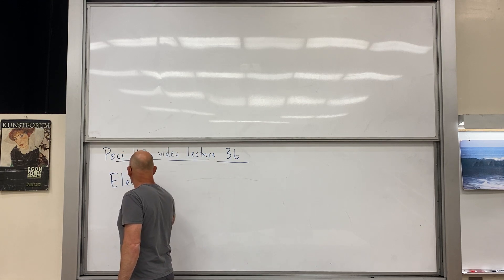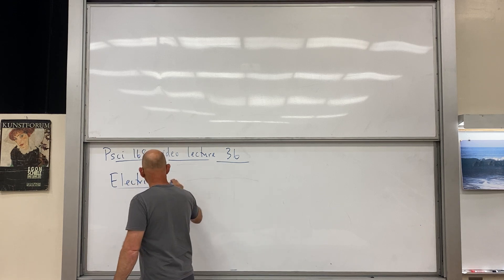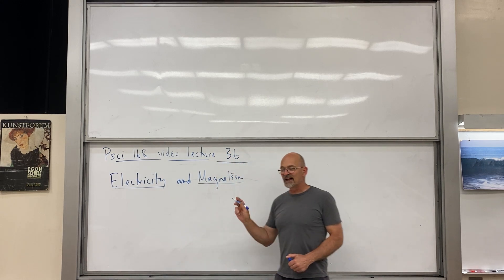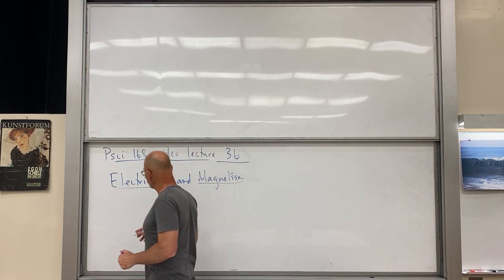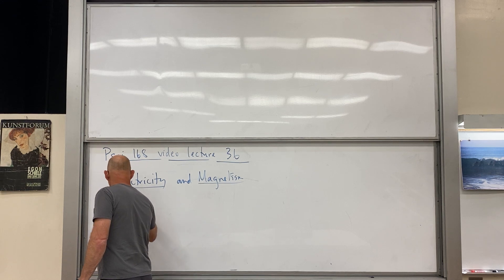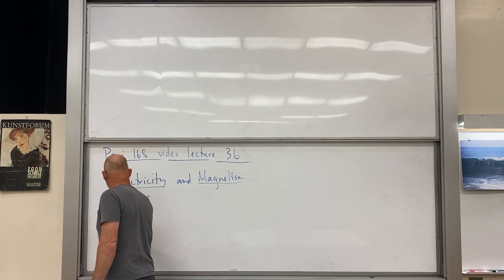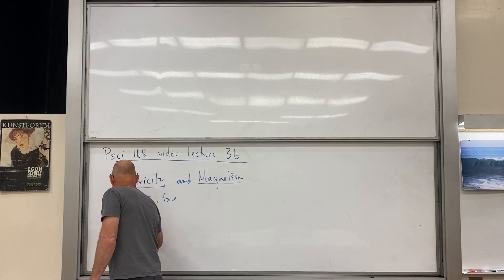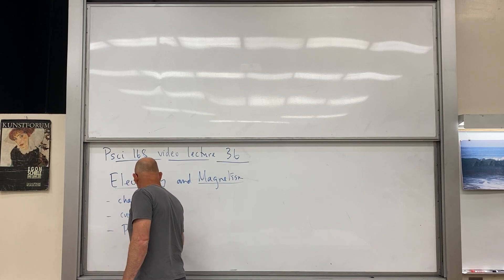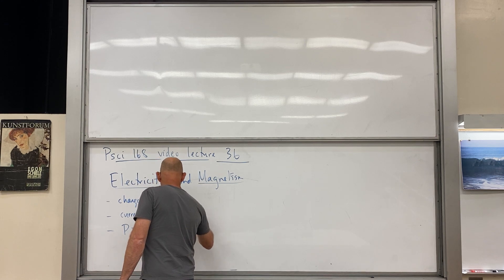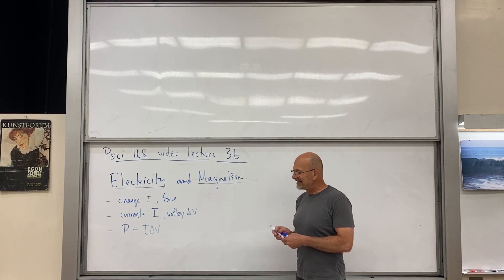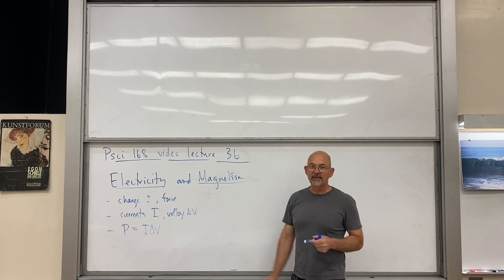We've been talking about electricity. I've mentioned magnetism. Today we're going to look at magnetism because there's an essential connection. Let's remind ourselves of electricity: we have charge, positive and negative, and the force. We have currents, and then we have the power formula, which is I times voltage, I delta V. I may not have mentioned the electric field, but I'll make up for it because I'm going to talk about the magnetic field.